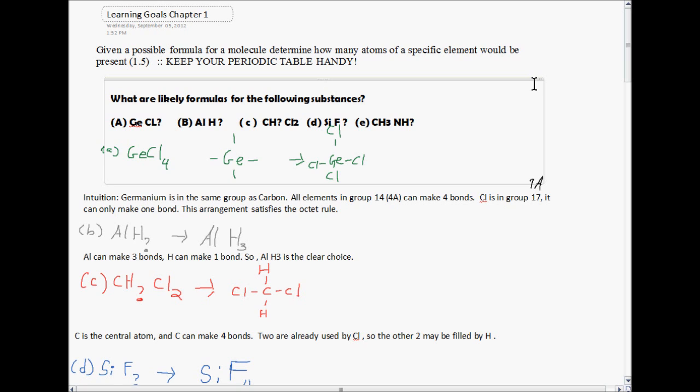So here are the learning goals for chapter 1. Given a possible formula for a molecule, determine how many atoms of a specific element would be present. Now for these problems, you definitely want to keep your periodic table handy with how many bonds each atom can make that we looked at just a moment ago.